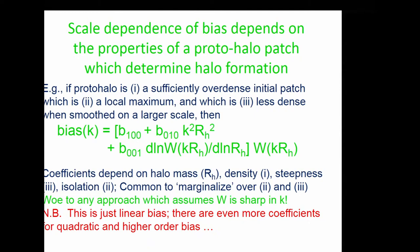The statement that bias is purely scale-independent and lets you shift power spectra by a multiplicative constant is a good approximation but not exactly true. In practice, bias does depend on scale a little. At very large scales it is an excellent approximation; at smaller scales it becomes scale-dependent.